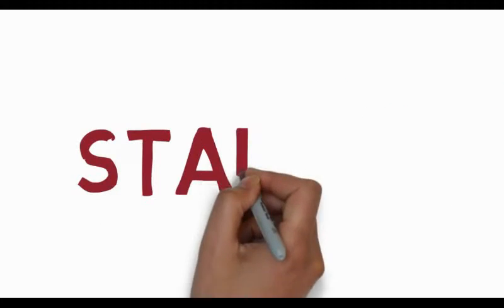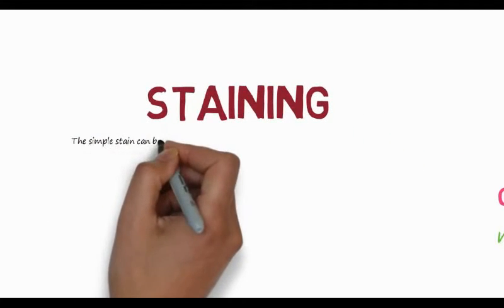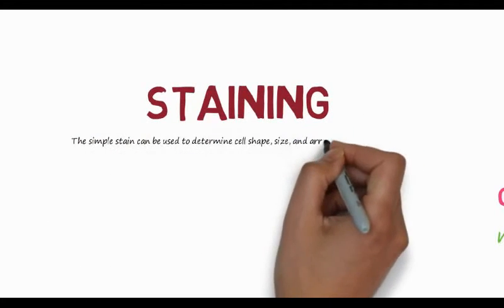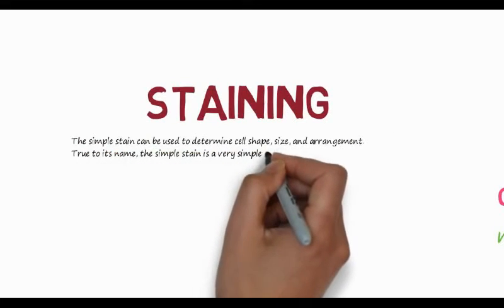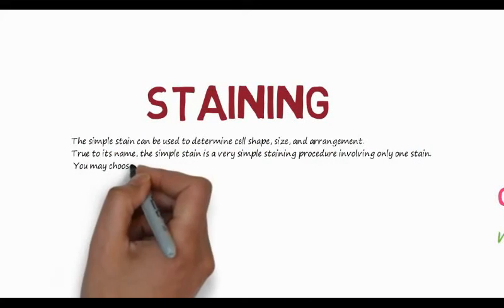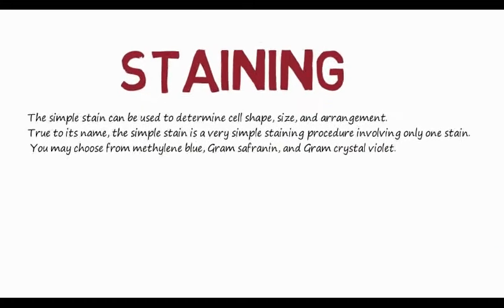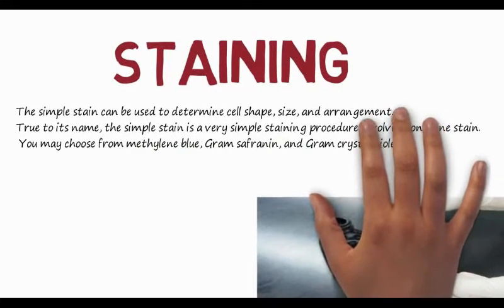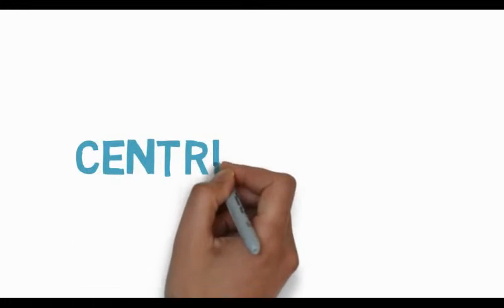The second technique is staining. Staining is a common process used with light microscopes. Staining means to color something, which makes cell structures visible and is therefore important for observation.